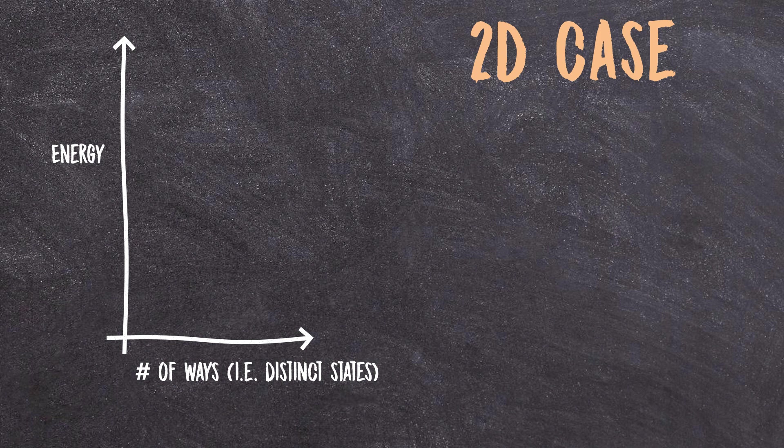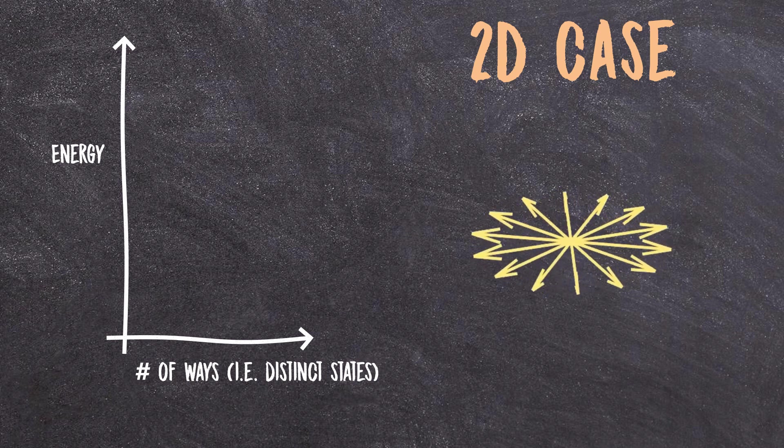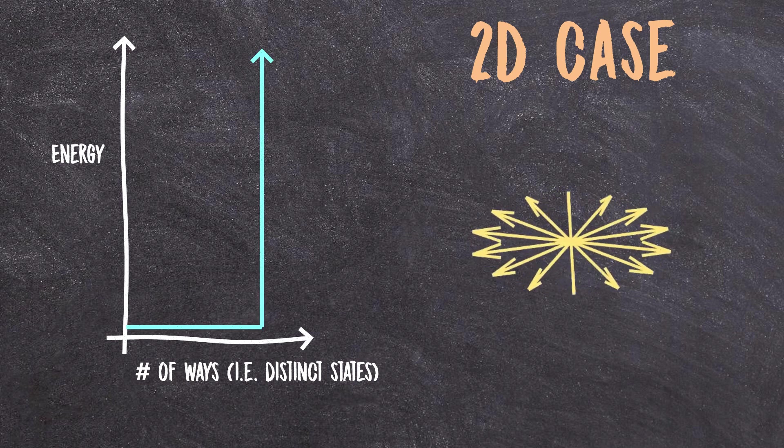Well, in two dimensions, rather than having a sphere of directions, I only have a circle of directions. There's less options. And again, if you crank the calculus, you'll find this shape. The density of states is actually energy independent in two dimensions.